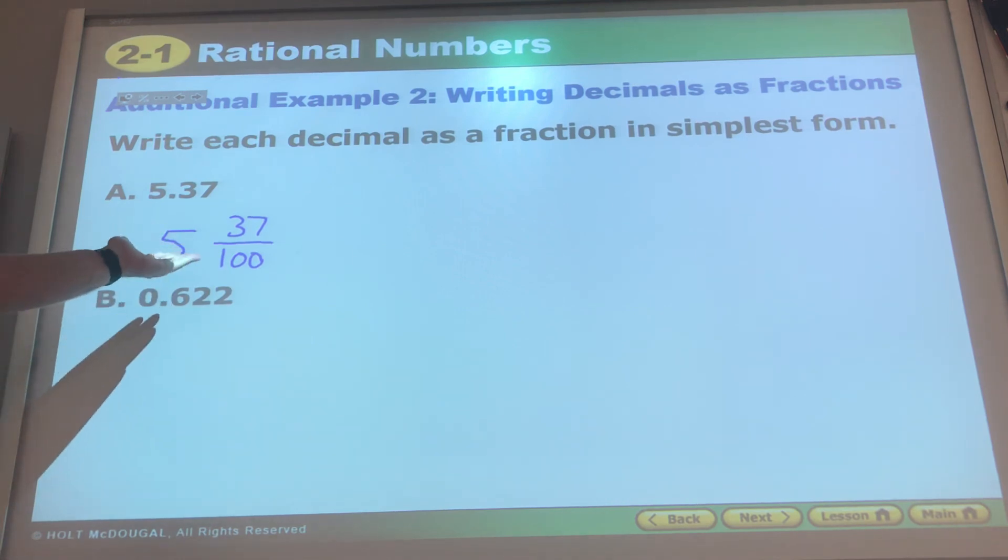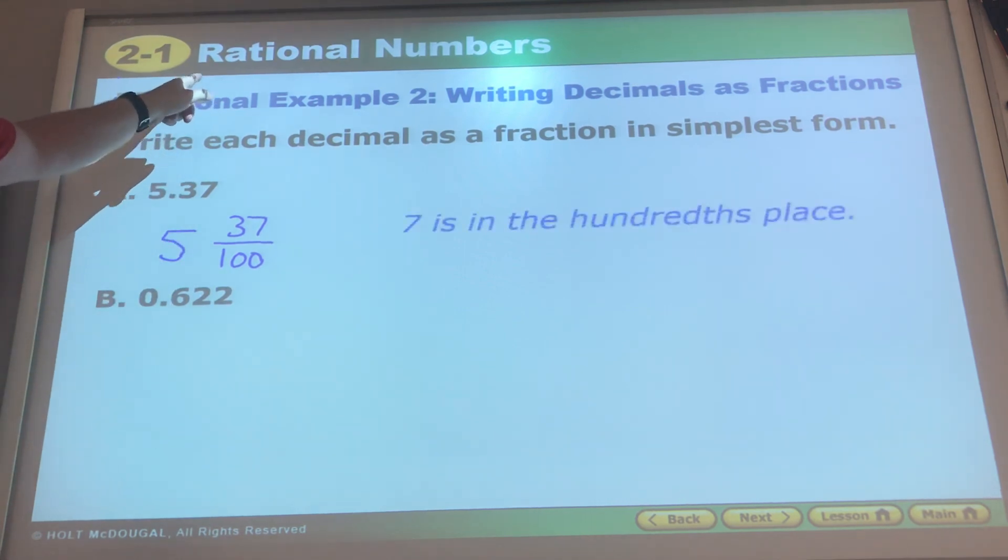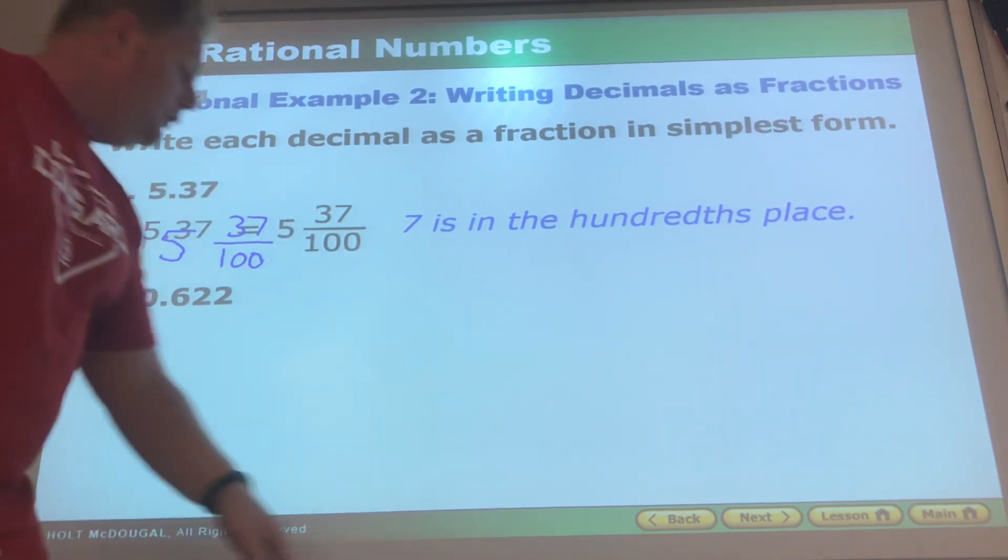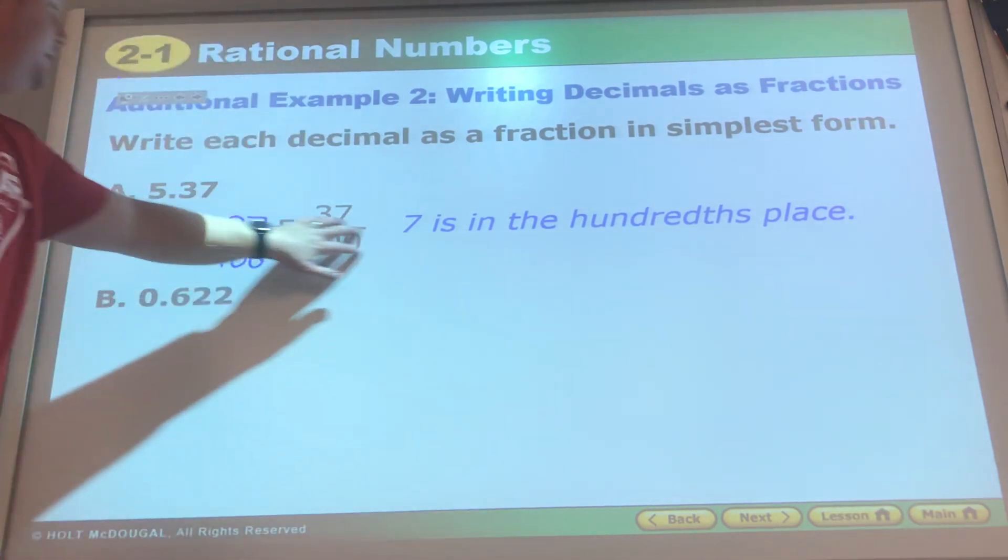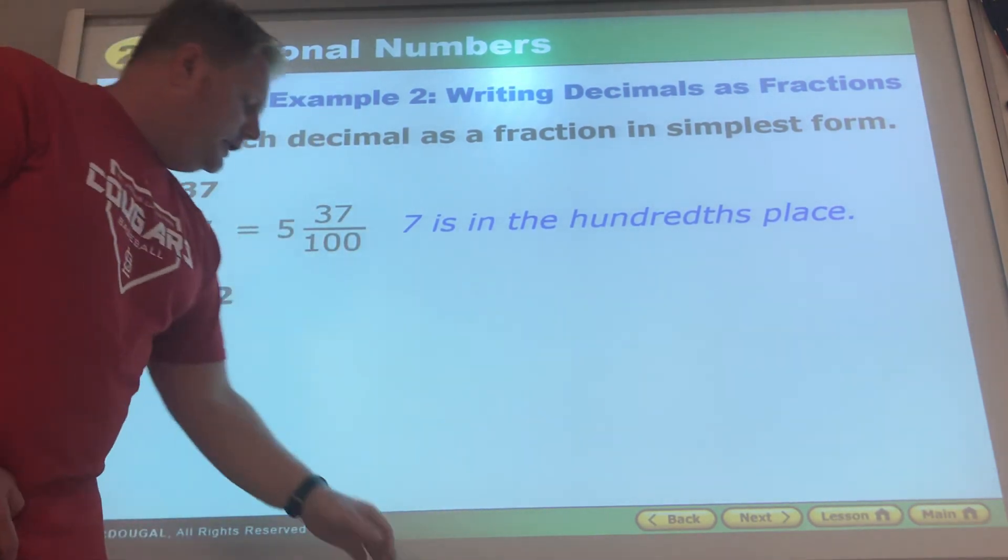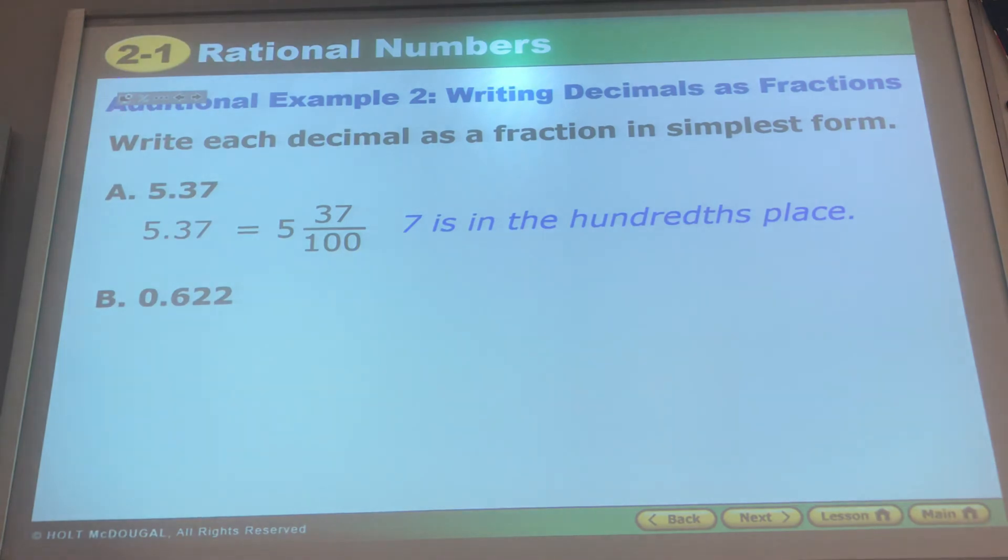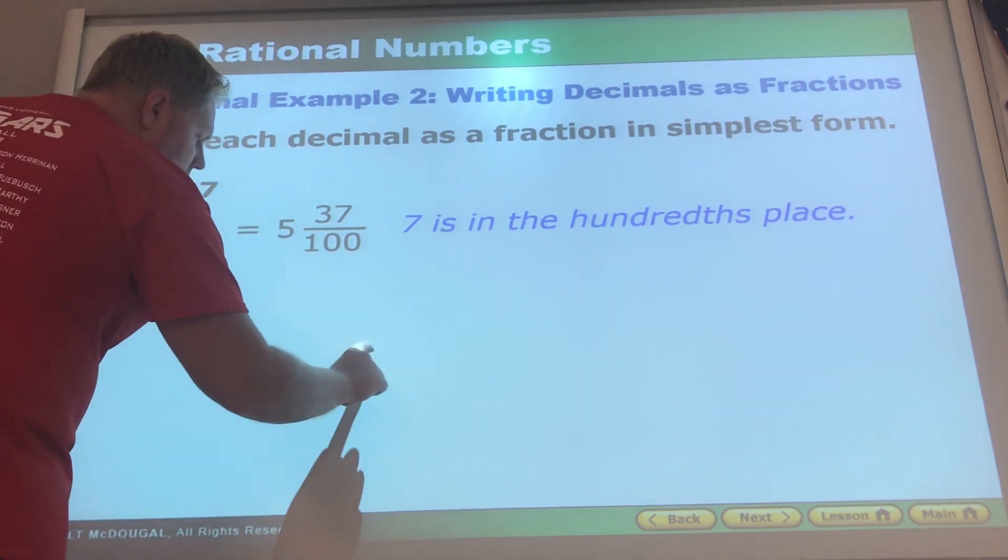37 over 100. How did I know 100? 37 hundredths, so I knew the 100 would go on bottom, I get a fraction. Therefore they write it as the same way. This one, 0.622 thousandths since it ends in the thousand spot, we put a thousand as our denominator and 622 goes on top. We've just written it as a fraction.